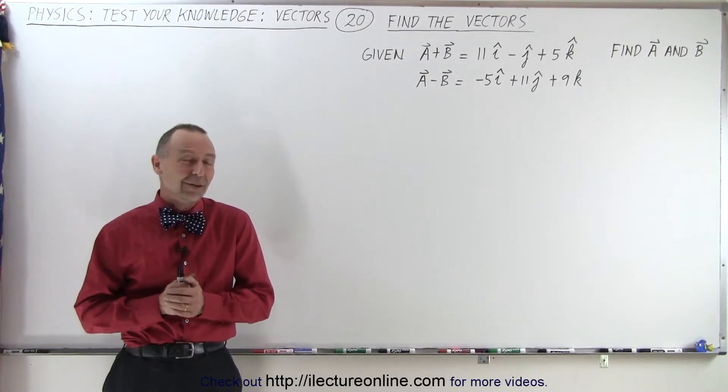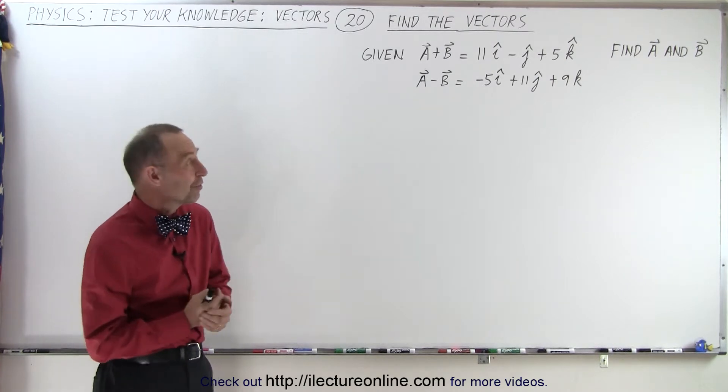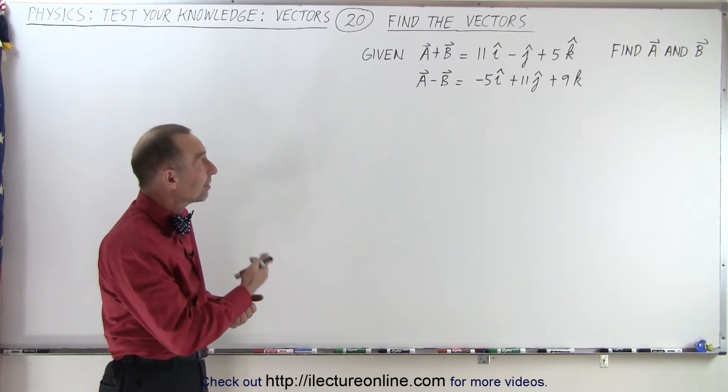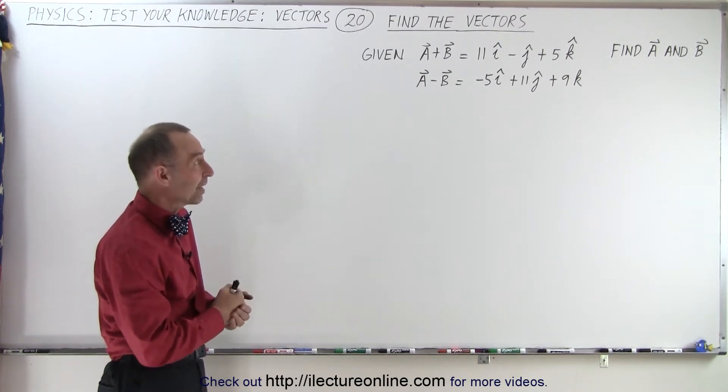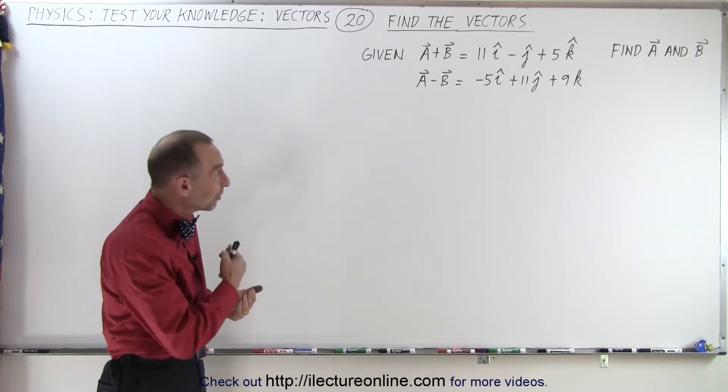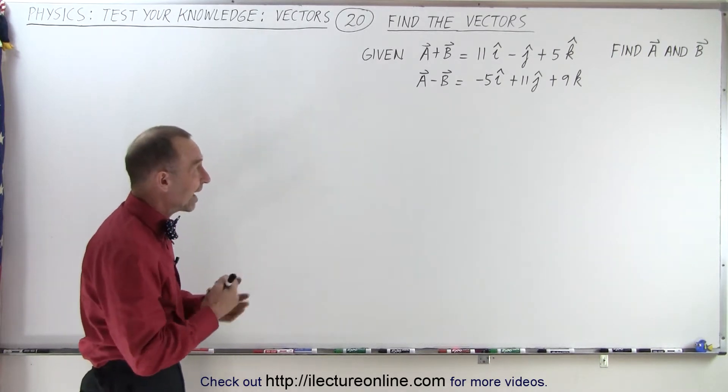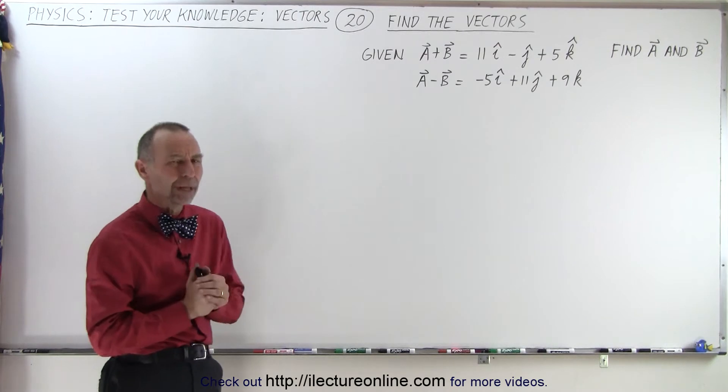Welcome to Y Lecture Online. In our next problem we're given the sum and the difference of two vectors. We're given that a plus b is 11i minus j plus 5k, and a minus b is minus 5i plus 11j plus 9k, and we're supposed to find the individual vectors a and b. How do we do that?